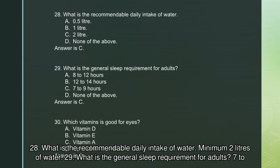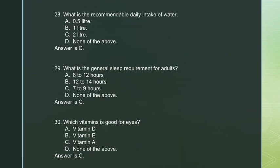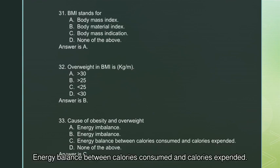Question 29: The general sleep requirement for adults is 7 to 9 hours — answer is C. Question 30: Vitamin A is good for eyes. Question 31: BMI stands for Body Mass Index. Question 32: Overweight in BMI terms is greater than 25 kilograms per meter squared — answer is B.